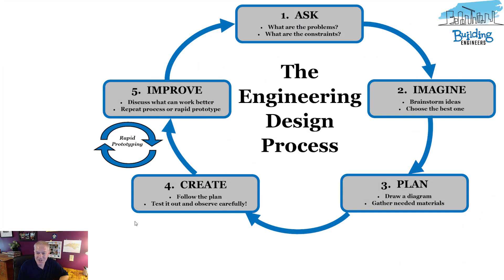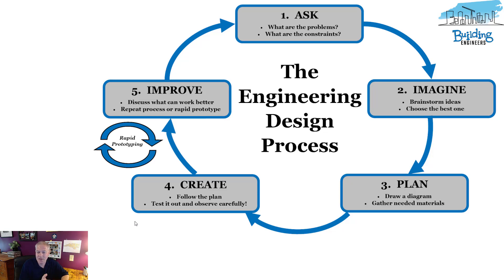Here is the engineering design process. As you can see, there are five separate steps: ask, imagine, plan, create, and improve — all centered around a challenging task that you give your students in the classroom. In this course, we are going to be diving into each of these steps, really talking about best practices and giving you some great classroom examples, and of course giving you a chance to try them with your students in your own classroom.